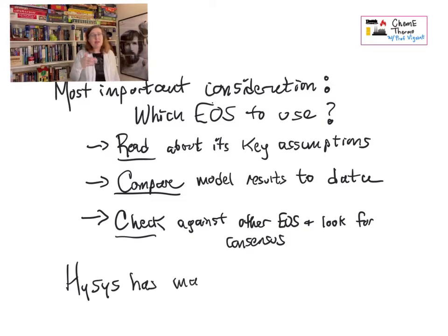So HISIS has a large number of equations of state, as does ASPEN. All of the popular chemical engineering modeling packages do. But you can use HISIS to explore different equations of state. Not only that, HISIS has a little fact about each one where you can read a little bit about the assumptions that went into them.